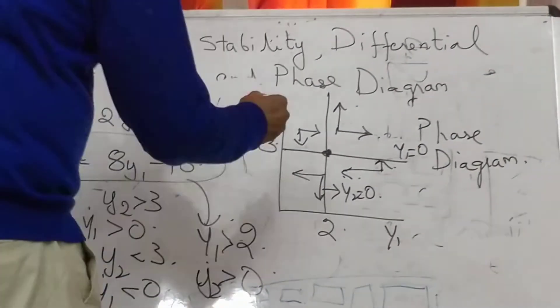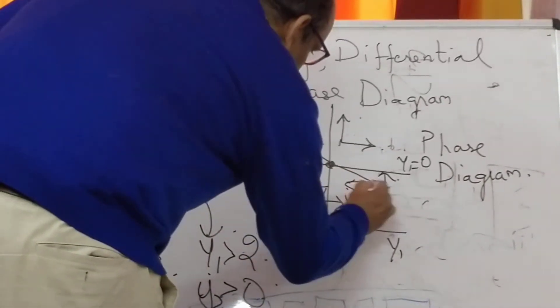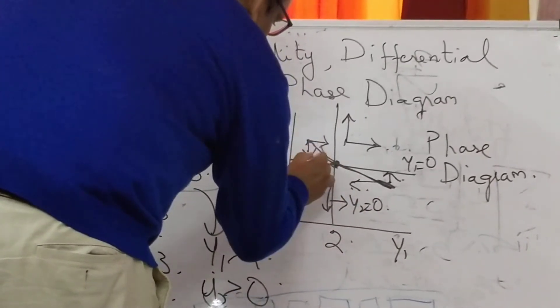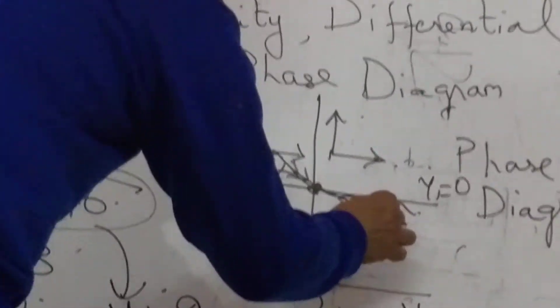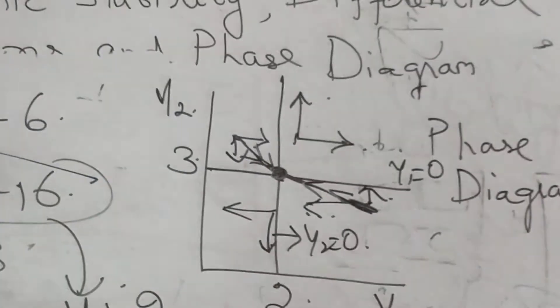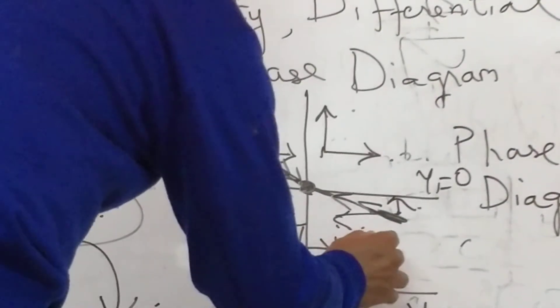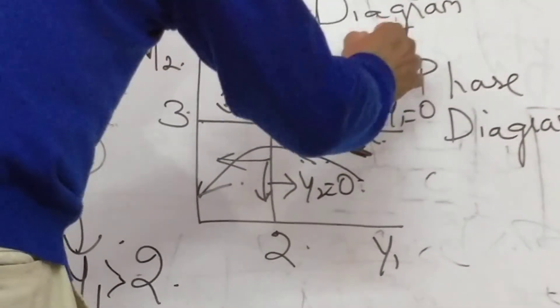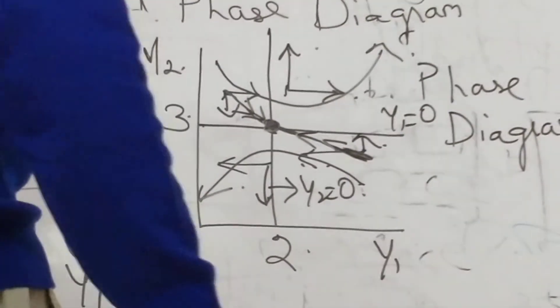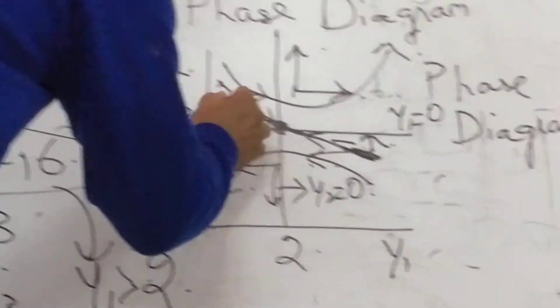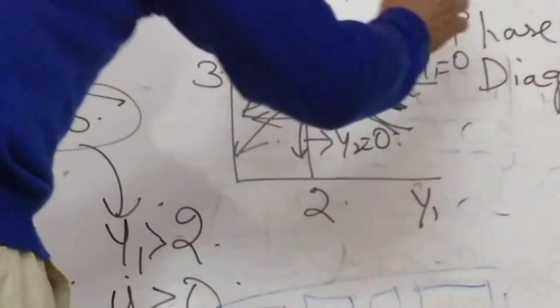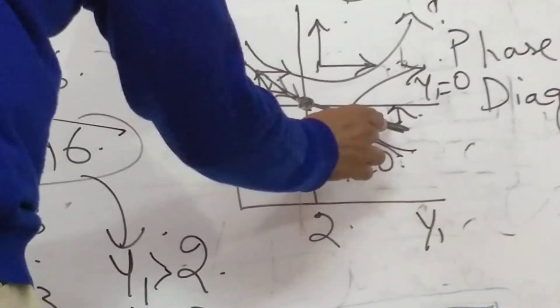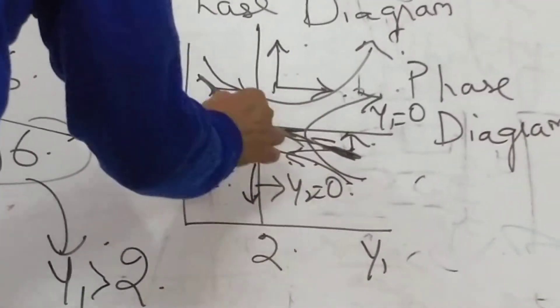If you wish to understand the saddle path — if you are somewhere on this path, the equilibrium forces will take you to the equilibrium point. If you are outside this path, looking at the arrows you will see they point away from equilibrium. It is only this saddle path which will take you to the equilibrium point. This is the famous saddle path.